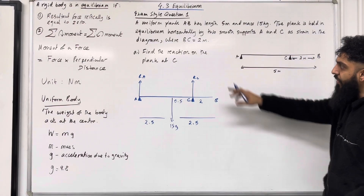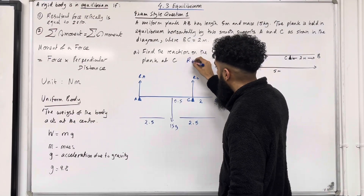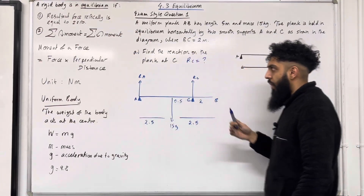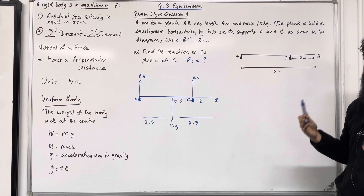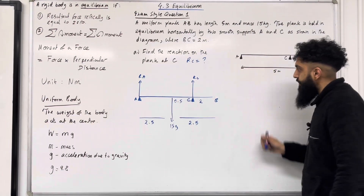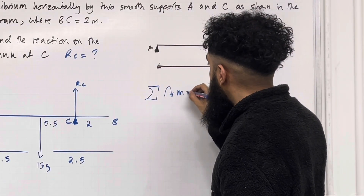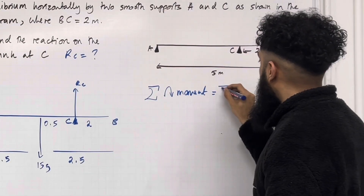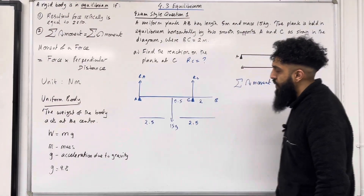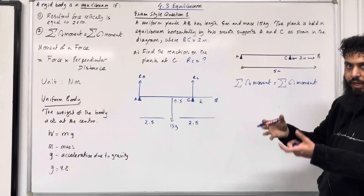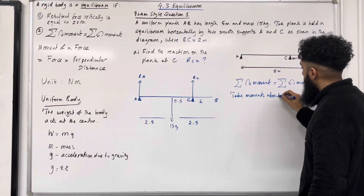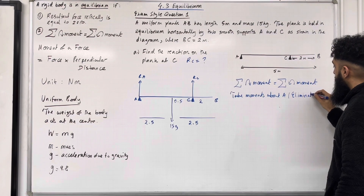In part A, I want to calculate the reaction on the plank at C, in other words Rc. Equilibrium implies both conditions are satisfied. If I use condition number one, this gives an equation with two unknowns, Rc and Ra. Hence, we must use condition two: the sum of clockwise moments equals the sum of anticlockwise moments. To work out Rc I need to eliminate Ra, and to do that I must take moments about point A. This will eliminate Ra.